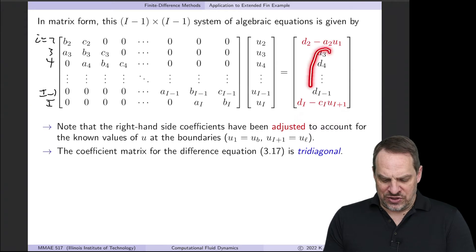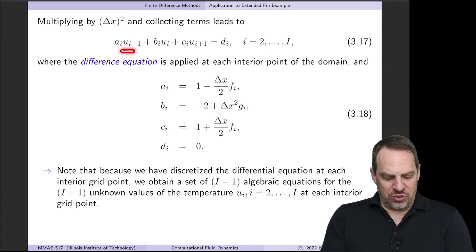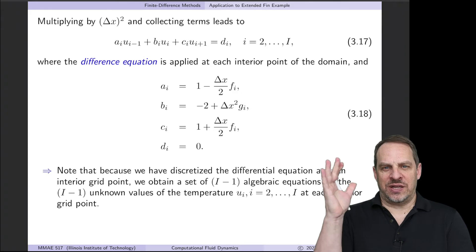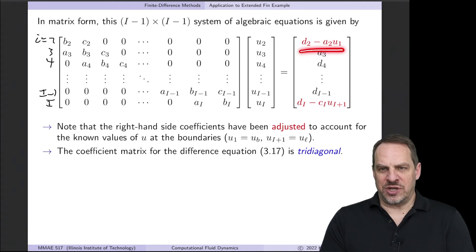The unknowns you see here in the u vector, and then the right-hand side vector we see here. Now you notice they're all just the d's, except for the first and the last one. In the first equation, if we go back and look at that, in the first equation, when i is equal to 2, i minus 1 is 1. u at x sub 1, well, that's that left boundary. We know the value there. That's u1. So it's d2 minus a2 times u1.